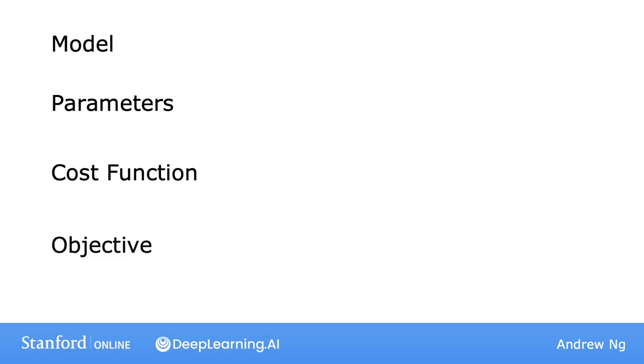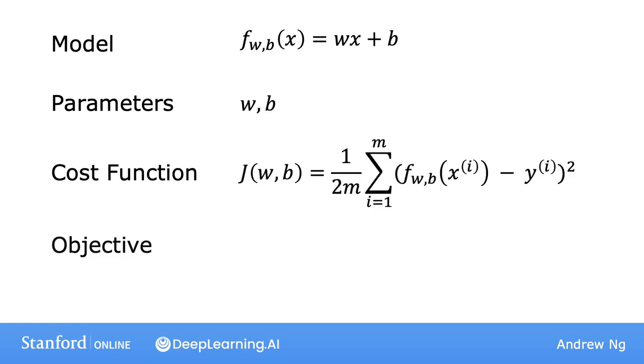Here is what we've seen so far. There's the model, the model's parameters w and b, the cost function j of w and b, as well as the goal of linear regression, which is to minimize the cost function j of w and b over parameters w and b.